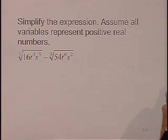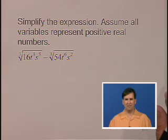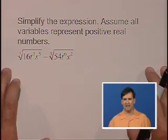Simplify the expression. Assume all variables represent positive real numbers. We have the cube root of 16t to the third s to the fifth minus the cube root of 54t to the sixth s squared.